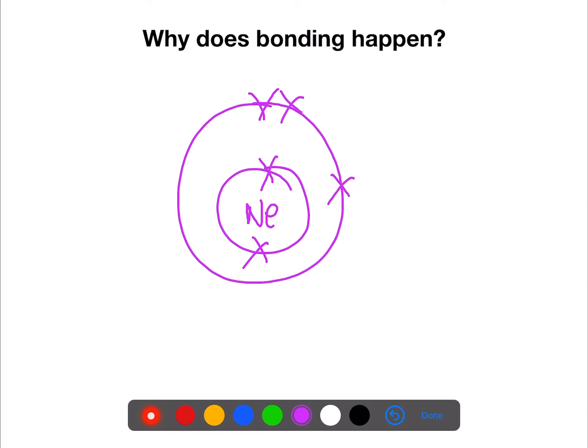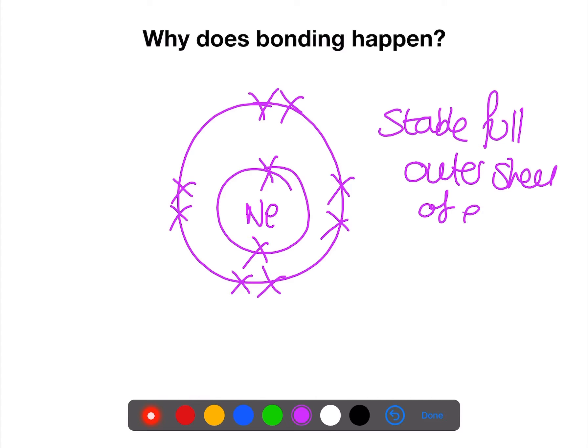Neon has an electron arrangement of two, eight — two electrons in the inner shell and eight electrons in its outer shell. So why doesn't neon bond? Neon has a stable full outer shell of electrons. This means that neon does not need to react with other elements to become stable.